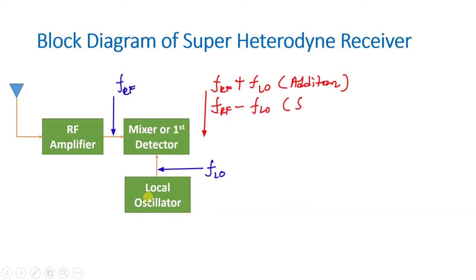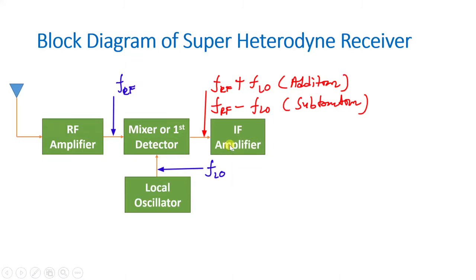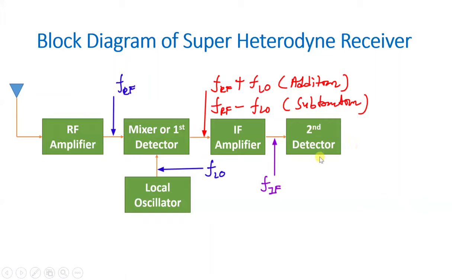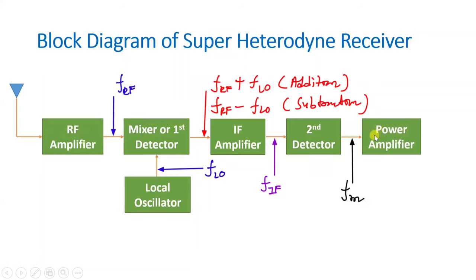The mixer receives the RF input signal and a second input from the local oscillator, and mixes these two signals. The output of the mixer has two frequency components: the sum and difference of the RF signal and local oscillator frequencies. Since our goal is to translate RF frequency into lower intermediate frequency (IF), we consider only the difference component. After the mixer, there is an IF amplifier to amplify the intermediate frequency signal, then a second detector containing another mixer and local oscillator that converts the IF signal into the message signal frequency, followed by a power amplifier driving the speaker.